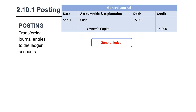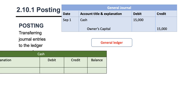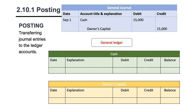First we have to bring the cash ledger and the owner's capital ledger. We need to identify the balance of every account: is cash a debit or credit account? Is owner's capital a debit or credit account? Cash is an asset, so it's a debit account — it increases with debit and decreases with credit. I'll add a plus under debit, minus under credit, and the opening balance is zero. Owner's capital is a credit account — it increases with credit and decreases with debit, and the opening balance is also zero.